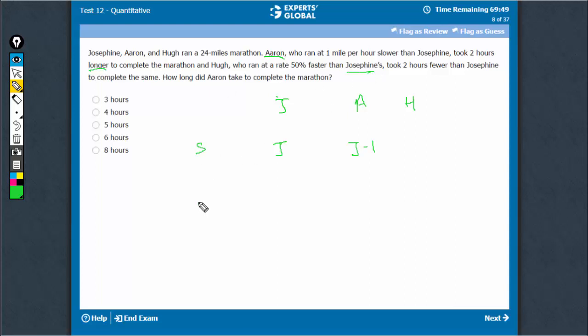So these are the speeds. Coming to time, A has taken, his speed is J, A has taken J plus 2 hours. And coming to U, U ran at 50% faster than J. So his speed is 1.5J and he has taken 2 hours fewer than J. So his time is J-2.